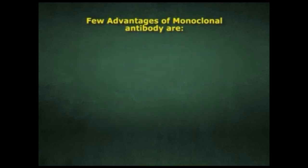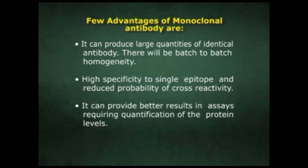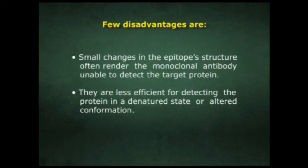There are advantages and disadvantages of monoclonal antibodies. Advantages include: ability to produce large quantities of identical antibody; batch-to-batch homogeneity; high specificity to a single epitope with reduced probability of cross-reactivity; and better results in assays requiring quantification of protein levels. Disadvantages include: small changes in the epitope structure often render the monoclonal antibody unable to detect the target protein; and they are less efficient for detecting protein in a denatured state or altered conformation.